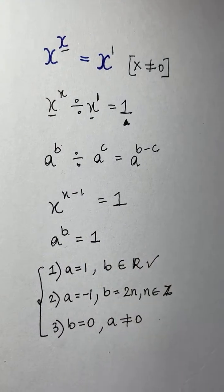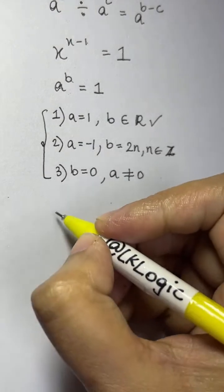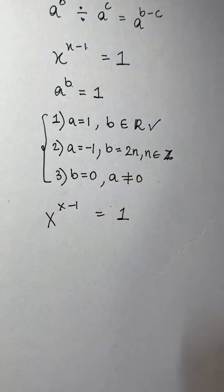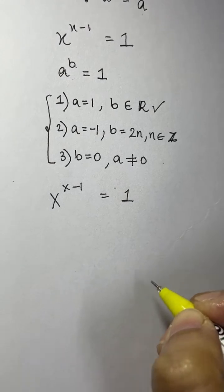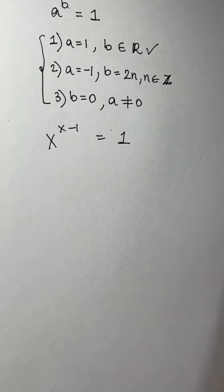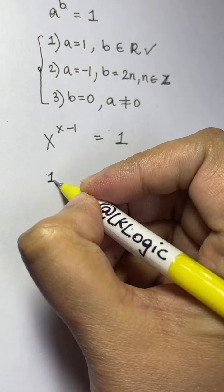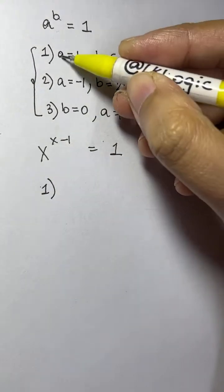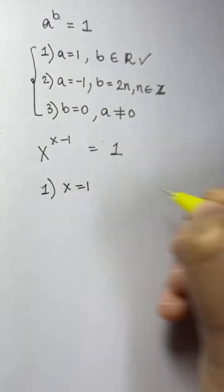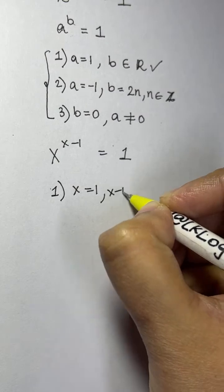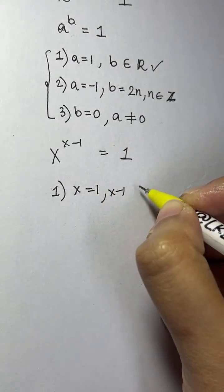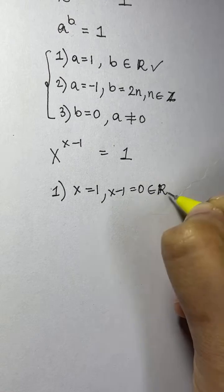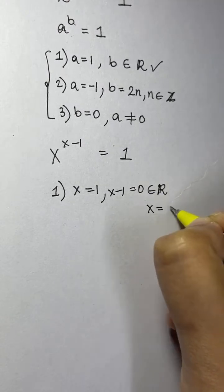Now let's substitute and check. Our equation is x to the power of x minus 1 equals to 1. For the first condition: if x equals 1, then a equals 1. The exponent x minus 1 becomes 1 minus 1, which equals 0. So x equals 1 is a solution.